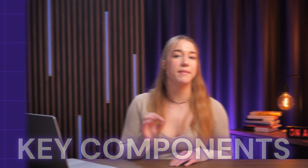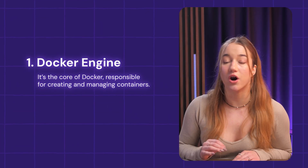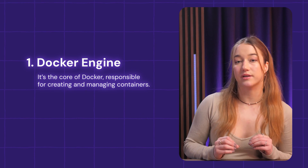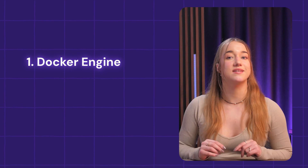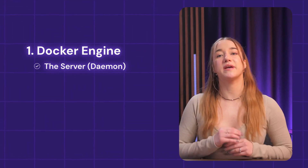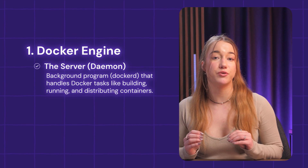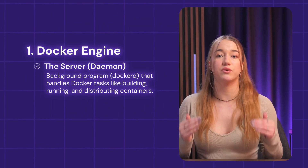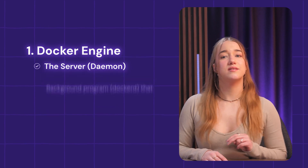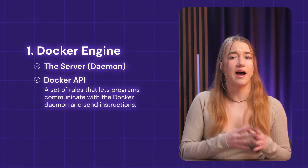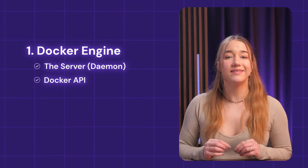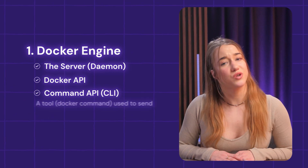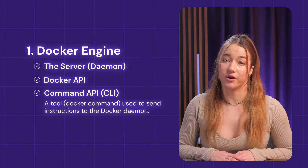To understand how Docker works, you first have to know its key components. One of them is Docker Engine, which is the core of Docker and is responsible for creating and managing containers. Docker Engine has three major components: the server or daemon, which is a program that runs in the background and manages all Docker-related tasks like building, running, and distributing containers; the Docker API, a set of rules that allows programs to communicate with the Docker daemon; and the command line interface, CLI, a tool used to send commands to the Docker daemon.